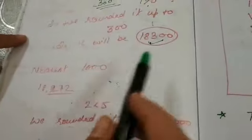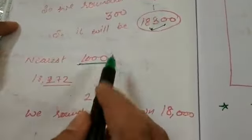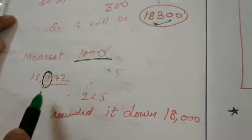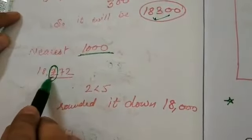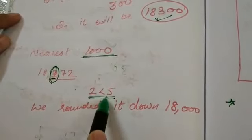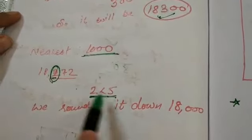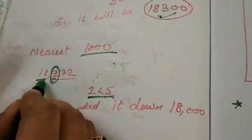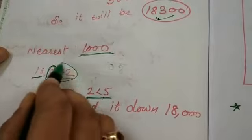Now the same way for 1000. In 1000, you have to see the hundred's place. The hundred's place here is 2. So 2 is less than 5. If 2 is less than 5, we will write the same digits, whatever it is having. And here we will put three zeros. So round off to 1000.